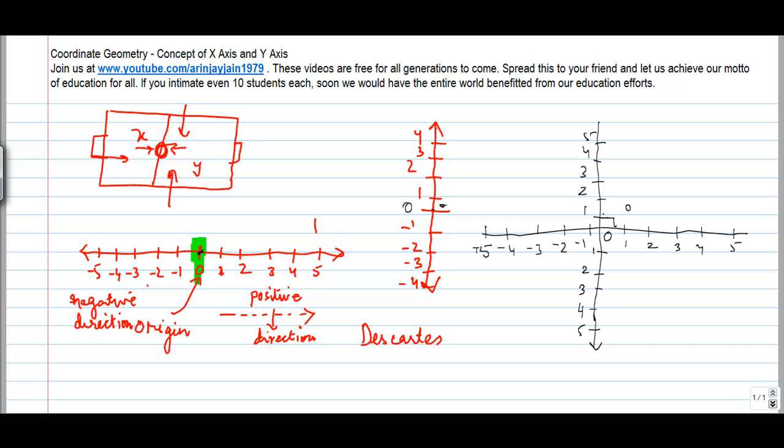And this angle has to be 90 degrees. So what he said was that if you want to locate any point, say suppose you want to locate a point here.